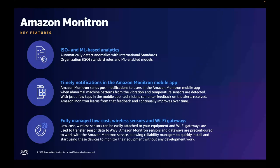It's a fully managed solution with low-cost wireless sensors and Wi-Fi gateways. Amazon Monitron includes low-cost wireless sensors that can be attached easily to your equipment, as well as Wi-Fi gateways used to transfer the sensor data to AWS. Monitron sensors and gateways are pre-configured to work with the Monitron service, allowing reliability managers to quickly install and start using these devices to monitor their equipment without any development work at all.